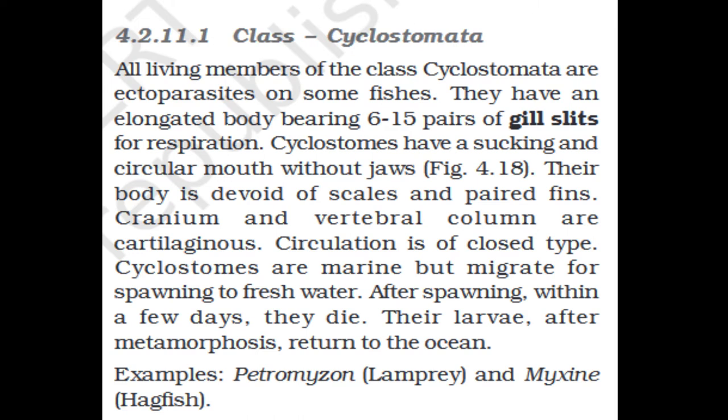Section 4.2.11.1: Class Cyclostomata. All living members of class Cyclostomata are ectoparasites on some fishes. They have an elongated body bearing 6 to 15 pairs of gill slits for respiration. Cyclostomes have a sucking and circular mouth without jaws. Their body is devoid of scales and paired fins. Cranium and vertebral column are cartilaginous. Circulation is of closed type. Cyclostomes are marine but migrate to fresh water for spawning. After spawning, within a few days they die. Their larvae after metamorphosis return to the ocean. Examples: Petromyzon (lamprey) and Myxine (hagfish).